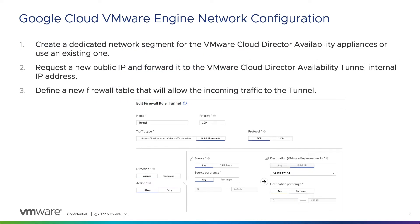First, let's start with the network configuration of the Google Cloud VMware Engine. You need to create a new network segment or reuse one of the existing ones where to connect the VMware Cloud Director availability appliances. Creating a new one should be done in the NSX UI and the segment settings should be set according to the desired network architecture.